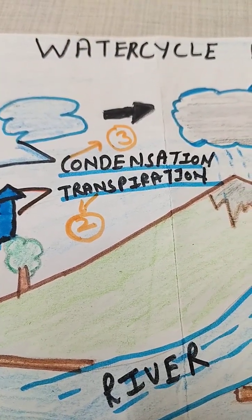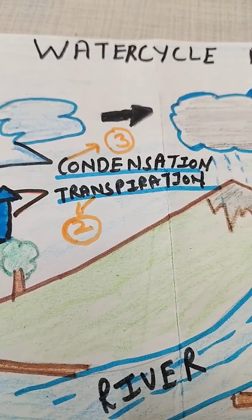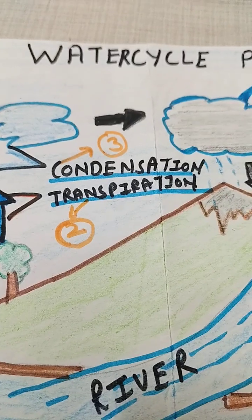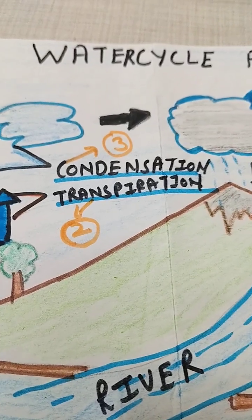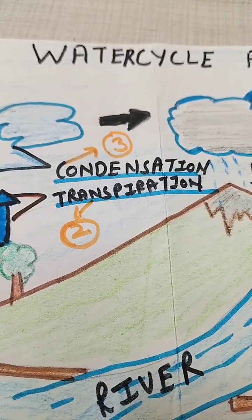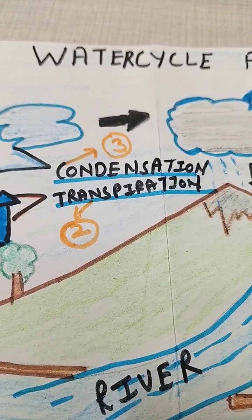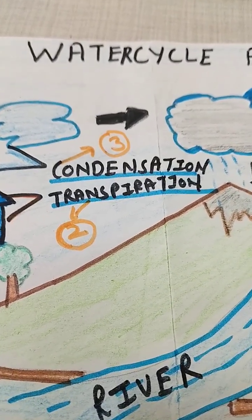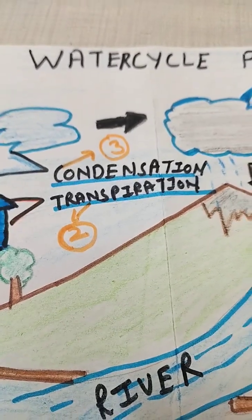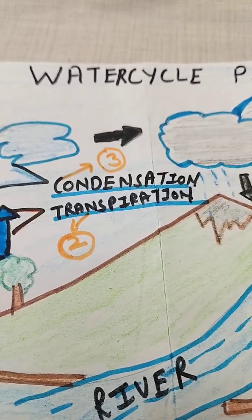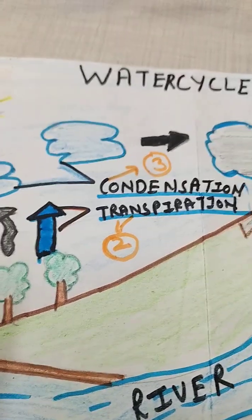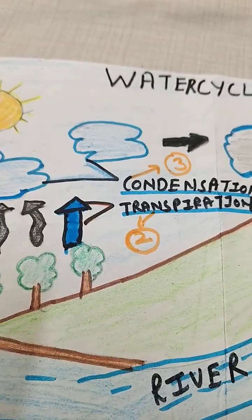The second point is transpiration. Transpiration is the process in the water cycle where plants release water vapor into the atmosphere through small pores on their leaves, which are called stomata.